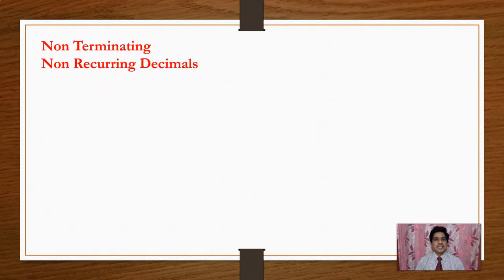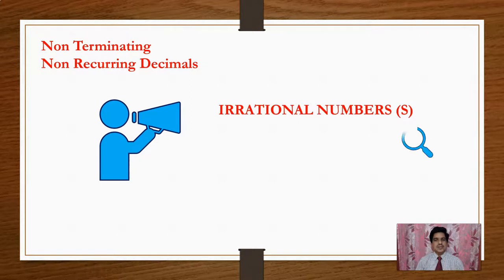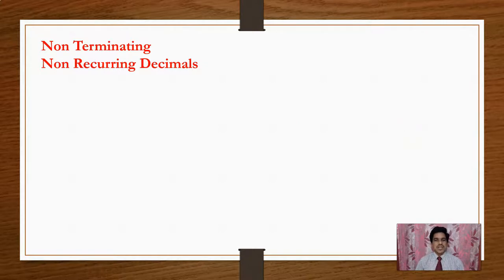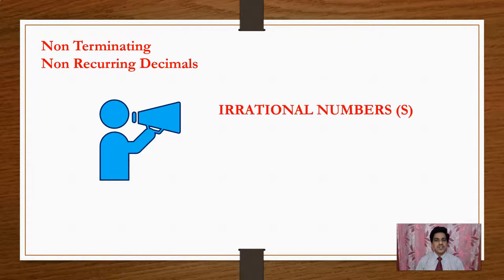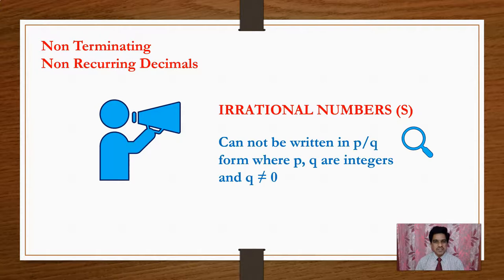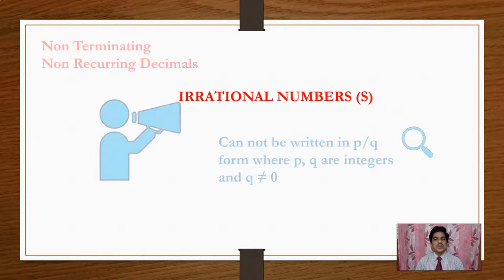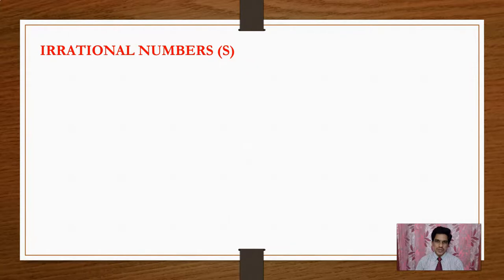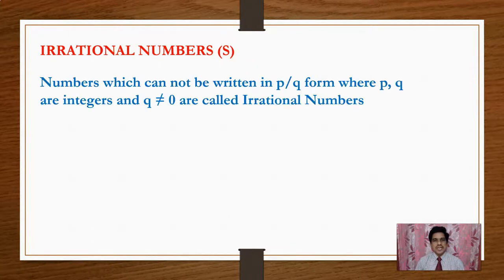These Non-Terminating and Non-Recurring Decimals are called Irrational Numbers. The numbers whose decimals are Non-Terminating and Non-Recurring are called Irrational Numbers. Irrational Numbers are denoted with the letter S. Irrational Numbers are the numbers which cannot be written in the form of P by Q, where P and Q are integers and Q not equal to 0.